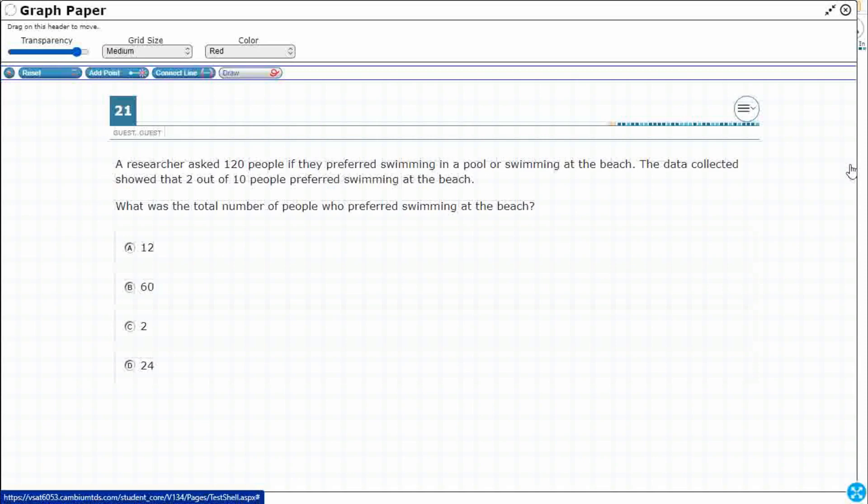I'm automatically going to start with a proportion here. So I'm going to say 2 out of 10, but we always need to be very careful to label each of these numbers. So 2 out of 10 people at the beach.